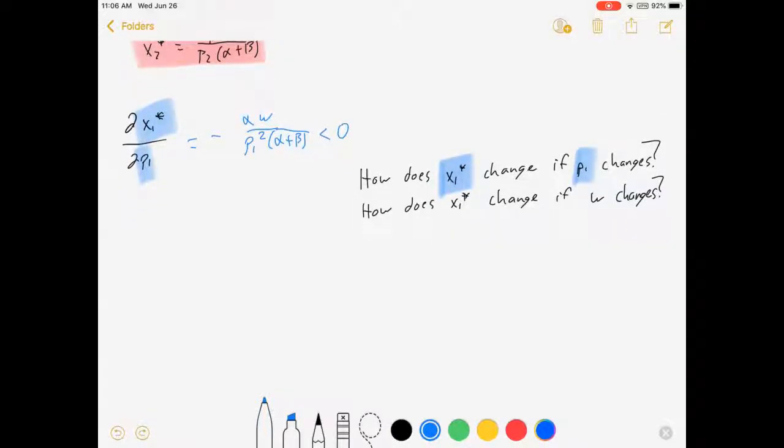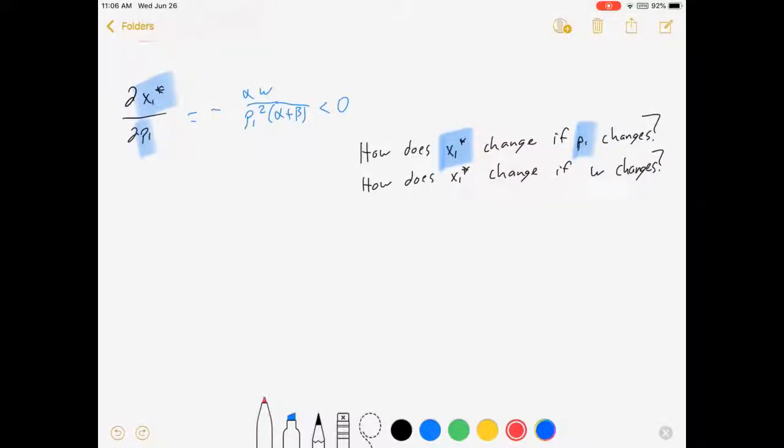The other question we could ask, how does x1 change if w changes? Similar idea. dx1 star dw. Again, here it is. How does x1 change if w changes? The derivative of x with respect to w. That's how we do comparative statics.